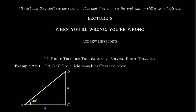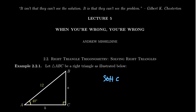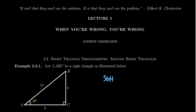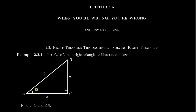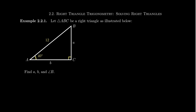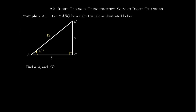Just as a reminder, in lecture four of our series, we introduced right triangle trigonometry and talked about SOHCAHTOA — the mnemonic device for the three fundamental trigonometric ratios: sine is opposite over hypotenuse, cosine is adjacent over hypotenuse, and tangent is opposite over adjacent. In lecture five, we want to use SOHCAHTOA and the other trigonometric ratios to solve missing parts of right triangle diagrams, and then apply those to various applications of right triangle trigonometry.